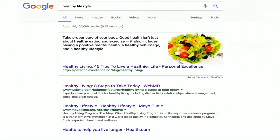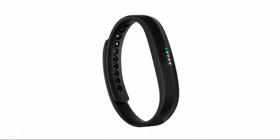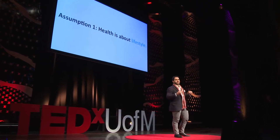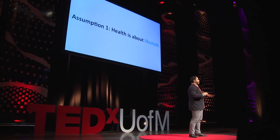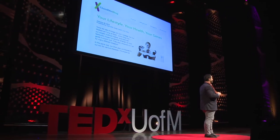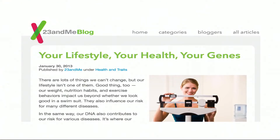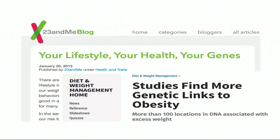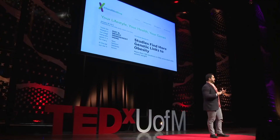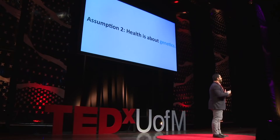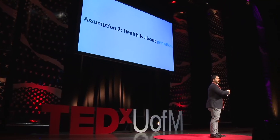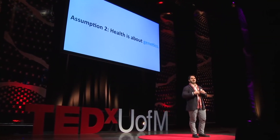We might have Googled 'healthy steps to healthy living' or 'eight ways to optimize your health,' or gotten a fitness tracker to keep track of physical activity — because we assume that health is about lifestyle, that we have a choice about the kind of health we experience. Or perhaps we got a cheek swab kit to see what our genes tell us about our past and maybe our future. After all, there are tons of studies linking genes to all kinds of outcomes. So we also assume that health is about our genes — either what we choose to do, or something embedded before we ever had a choice.